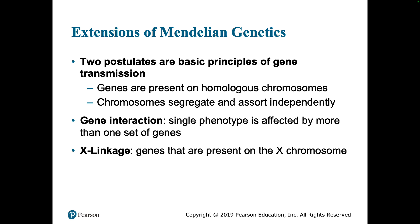A couple of the exceptions or extensions of Mendelian genetics that we're going to talk about are: one, gene interaction, where a single phenotype is affected by more than one set of genes — for example, human eye color, human skin color, human height — and X linkage, genes that are present on the X chromosome. In both of these cases, it's not as simple as a dominant-recessive. There are a number of different factors involved that can affect expression.